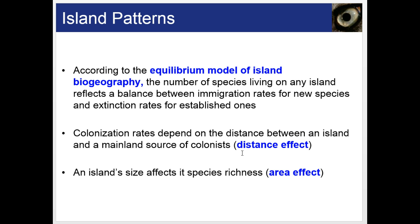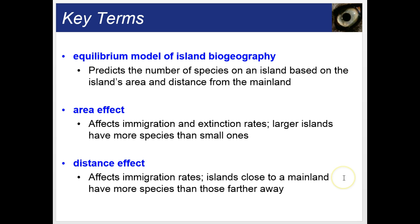Island patterns: according to the equilibrium model of island biogeography, the number of species living on any island reflects a balance between immigration rates for new species and extinction rates for established ones. Colonization rates depend on the distance between an island and a mainland source of colonists — the distance effect. An island's size affects its species richness — the area effect. The equilibrium model predicts species numbers based on island area and distance from the mainland. Larger islands have more species than small ones, and islands close to a mainland have more species than those far away.